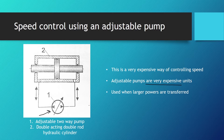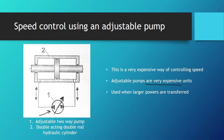An example of such a system with an adjustable pump is shown in the diagram on the left. We can see a double piston rod cylinder marked with number two — a double acting double rod hydraulic cylinder — and an adjustable two-way pump. The small arrow indicates it is adjustable, and the two triangles indicate it is a two-way pump. By adjusting the flow, you can adjust the speed of the cylinder.